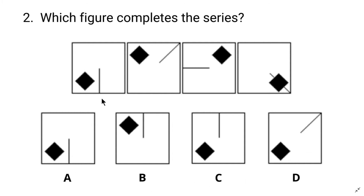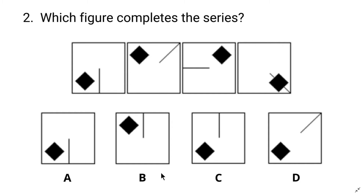Now let's find the pattern of the line. In the first image there is a vertical line, in the next a diagonal line, then a horizontal line, and again a diagonal line. So in the next image we can expect a vertical or horizontal line. We can also notice the line has rotated in a clockwise direction, so for the next image it will rotate again and the line will be vertical. So the answer should be C.